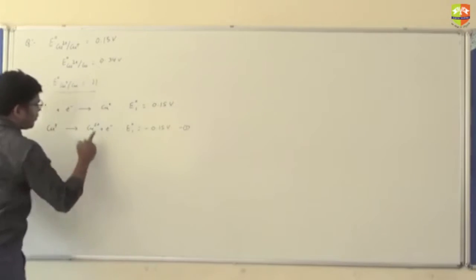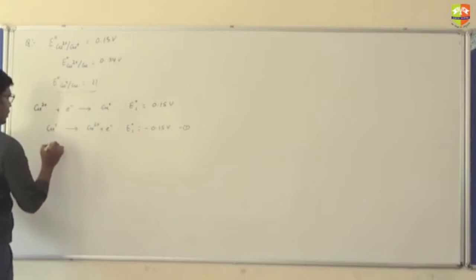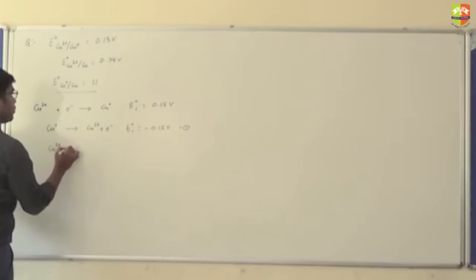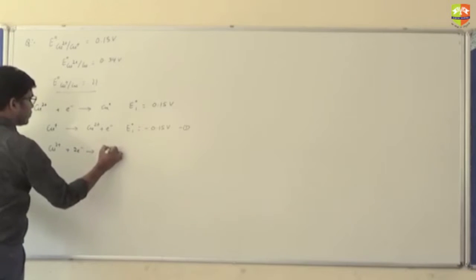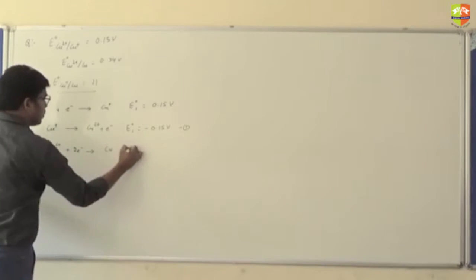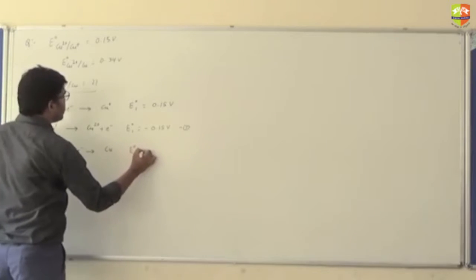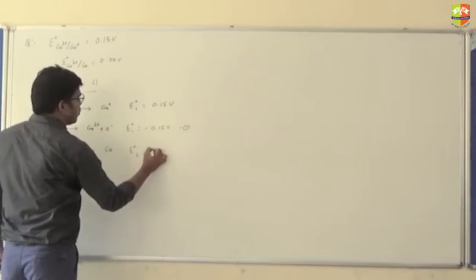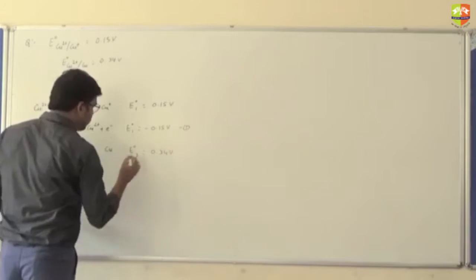We reverse it because Cu⁺ is on the reactant side. Now the second reaction is Cu²⁺ + 2 electrons → Cu, and E°₂ is 0.34 volt.